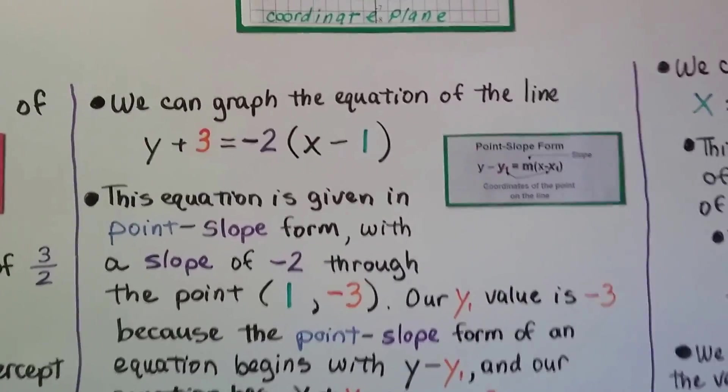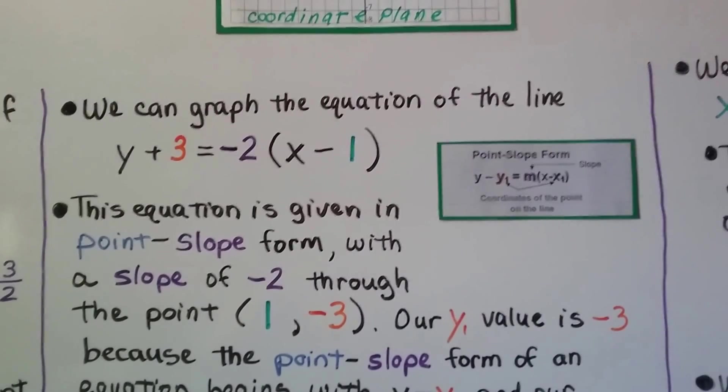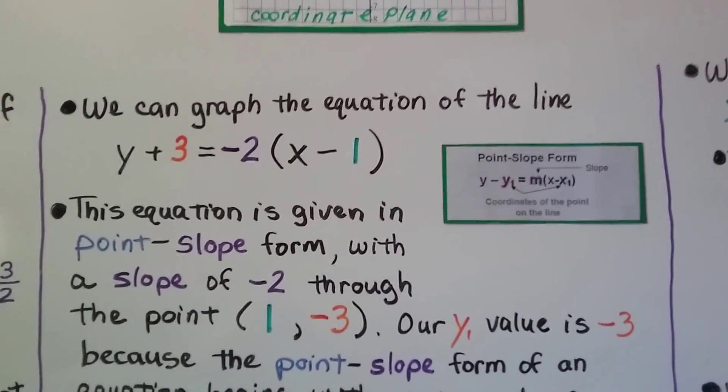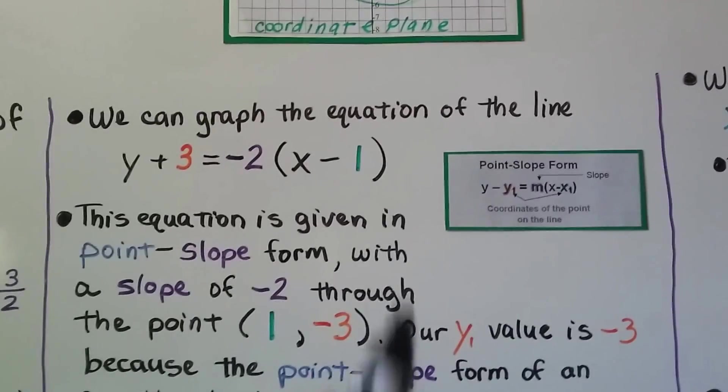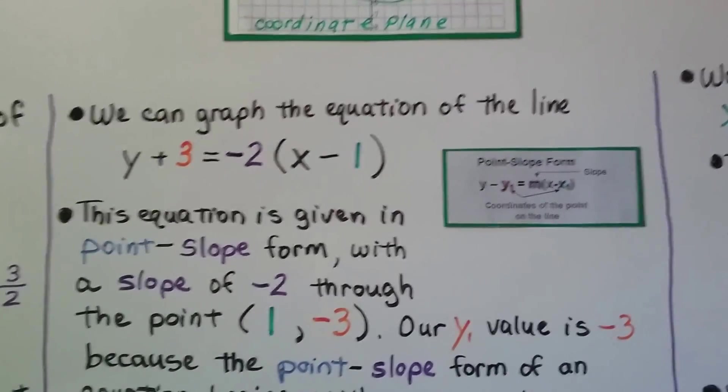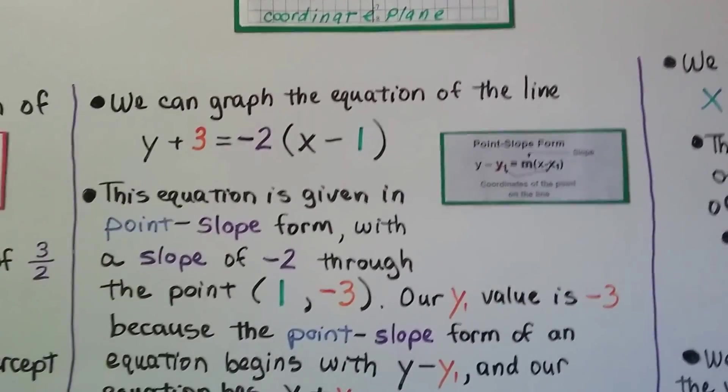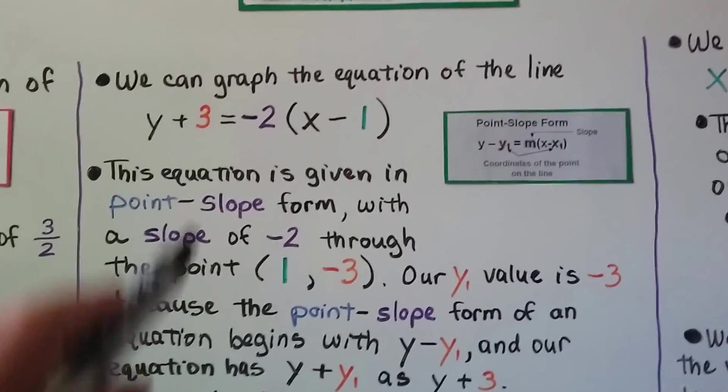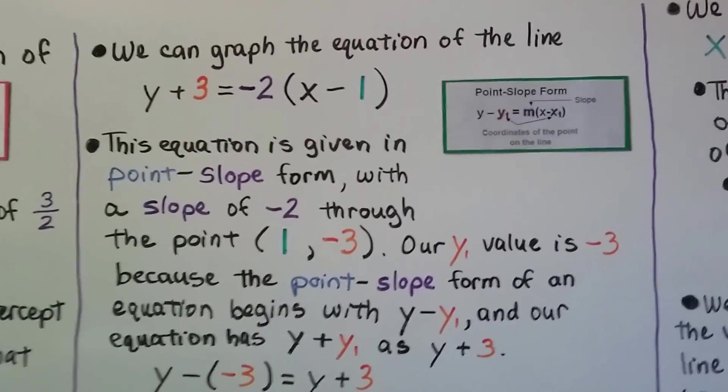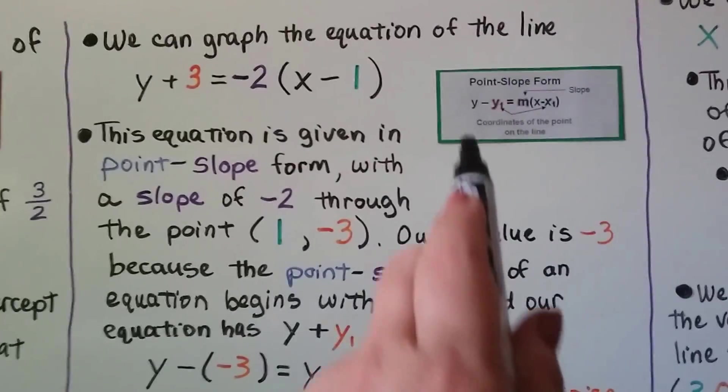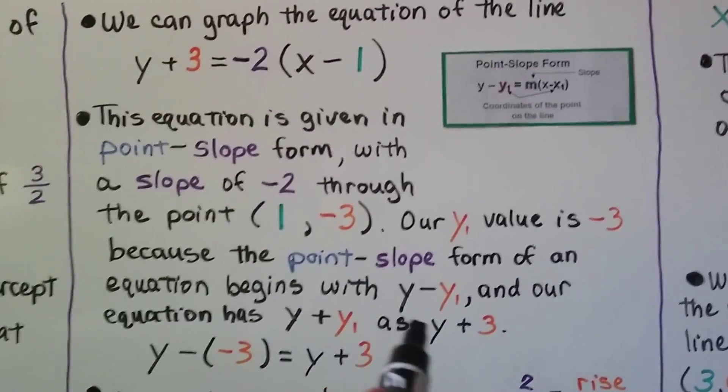We can graph the equation of the line y + 3 = -2(x - 1). This equation is given in point-slope form with a slope of negative 2. We know the m is the slope, so that's a negative 2 there. And it's through the point 1 for x and 3 for y. That's our x₁, y₁. And our y₁ value is negative 3.